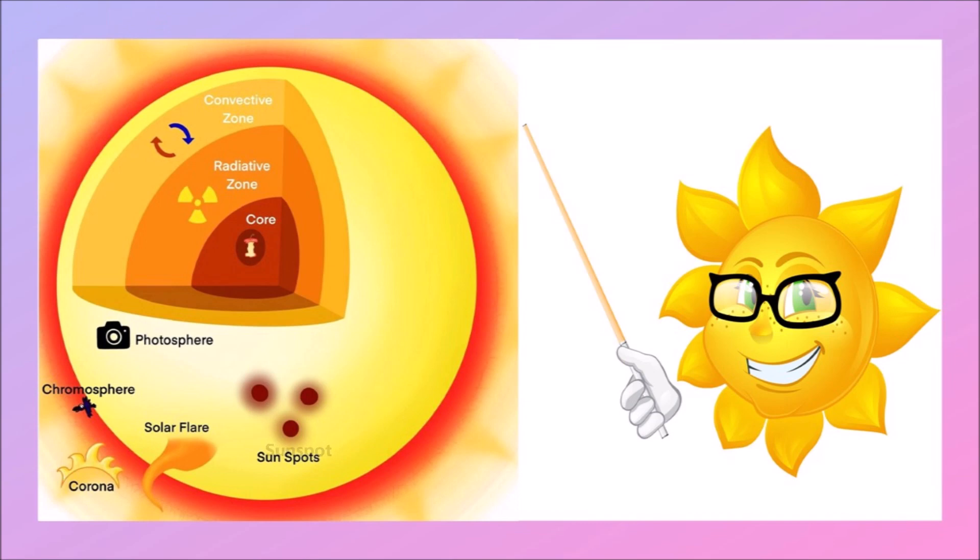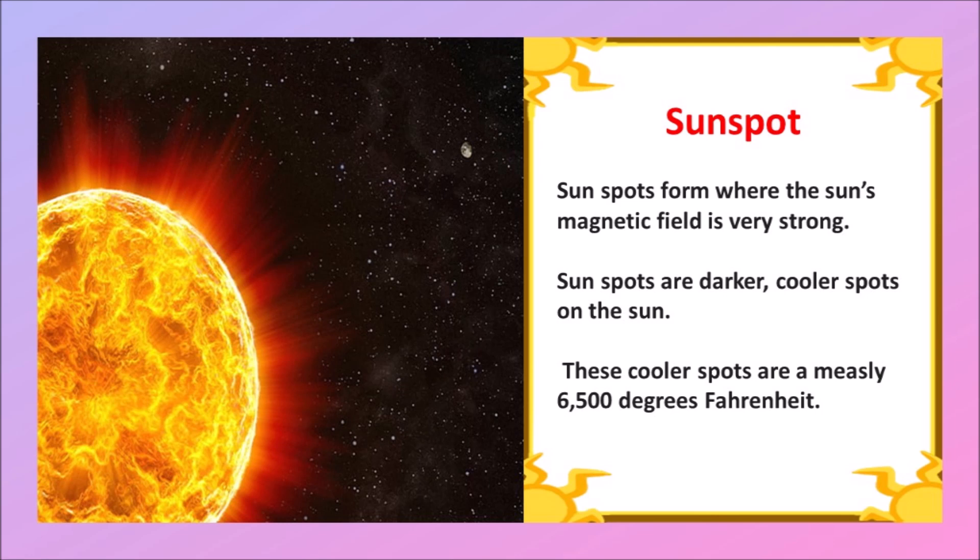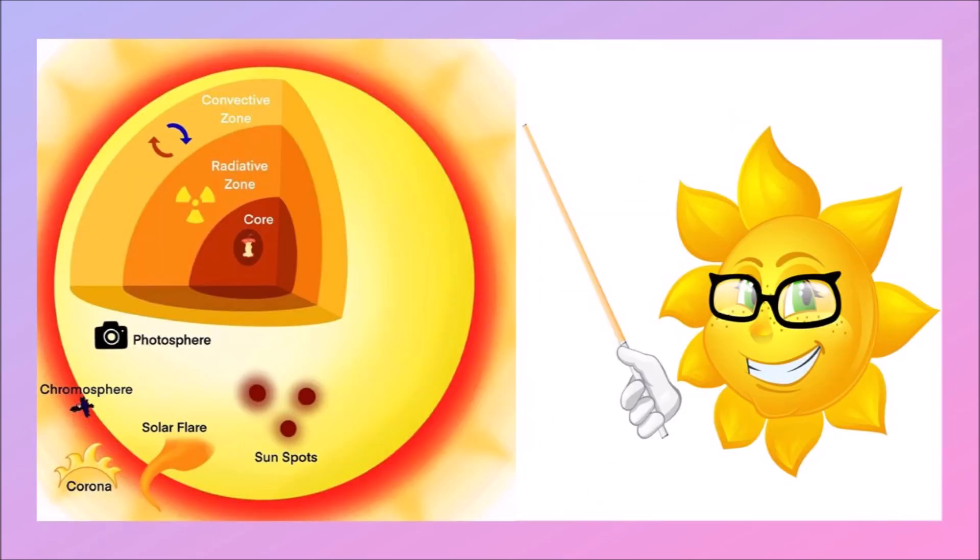The next one is sunspot. Sunspots form where the Sun's magnetic field is very strong. Sunspots are darker, cooler spots on the Sun. These cooler spots are about 6,500 degrees Fahrenheit.